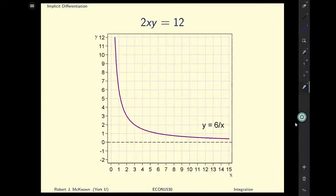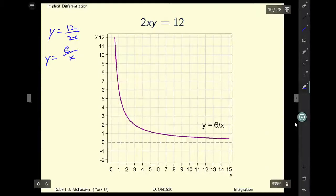Here we see a graph of the previous function. We've got y is equal to 12 divided by 2x, or y is equal to 6 over x. And we found the slope when x was equal to 6, right about there. And so we found that the slope of this line was equal to negative 1 over 6.